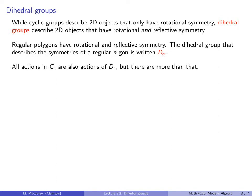If you think of cyclic groups and dihedral groups as actions, then all actions in C_N — namely the rotations — are also actions of D_N. But there are more than that. The group D_N contains 2N actions: N of these are rotations, which are also in C_N, and then there are N reflections that we don't get when we look at the symmetries of things like pinwheels.